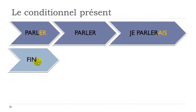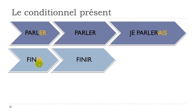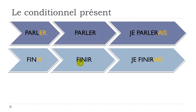The second group: verbs ending with IR. Be careful — not all verbs ending with ER belong to the second group, but a decent amount of them do. It will be quite easy because it is exactly the same way. You don't modify your infinitive form, you just keep it and add your ending — je finirai, so AIS.